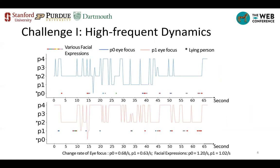Despite the importance of dynamic social interaction networks, mining indicative features from them is challenging. The first challenge is that behaviors can be highly dynamic and interweaving. In one dataset, five participants P0 to P4 shift their eye focus more than 30 times within one minute, and their facial expressions are recognized into one of eight emotions, also high-frequent. There are way more than two features to consider, and they are all high-frequent and interweaving together.